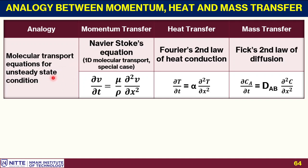For unsteady state molecular transport, there are three equivalent equations. In momentum transfer we call it the Navier-Stokes equation (one-dimensional); for heat transfer it is Fourier's second law; and for mass transfer it is Fick's second law of diffusion. The driving variables — velocity, temperature, and concentration gradient — are each a function of both time and space in all three cases.